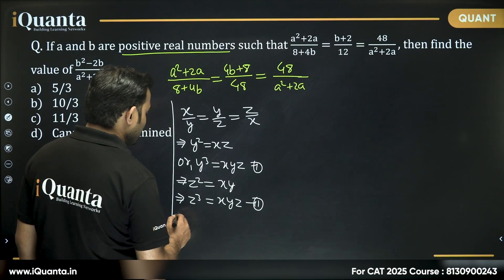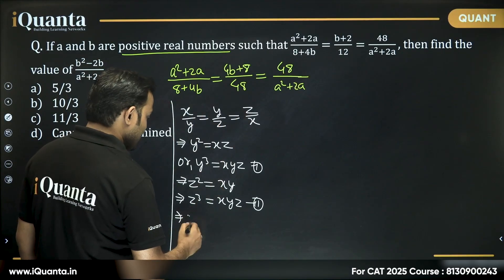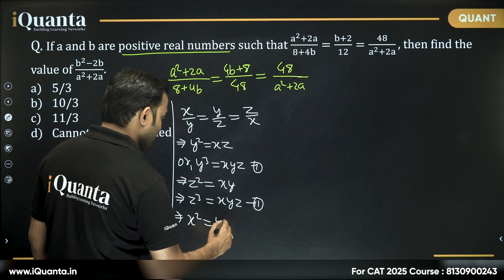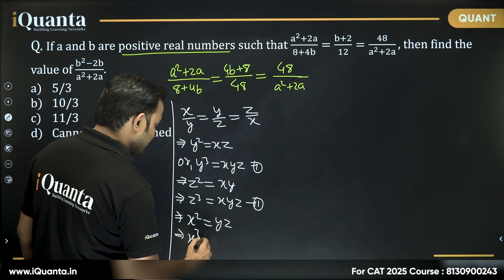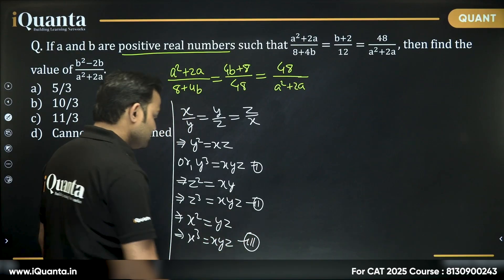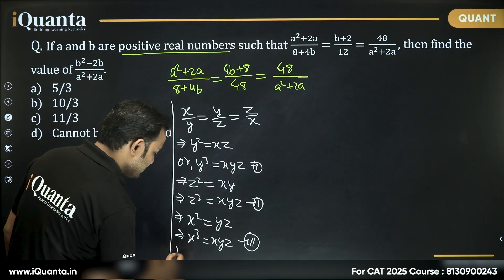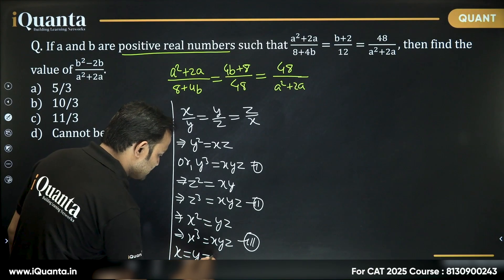Right, then again, we can say, taking the ratio first and third, x² will be equal to yz. Or multiplying by x on both sides, we get xyz is equal to x³. So can I say using equation 1, 2 and 3 that x is equal to y is equal to z.